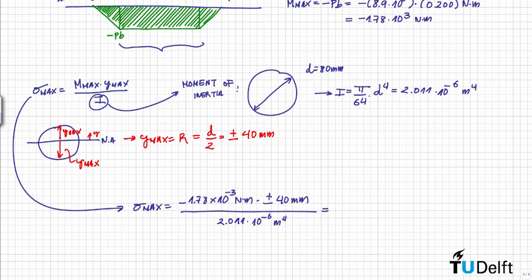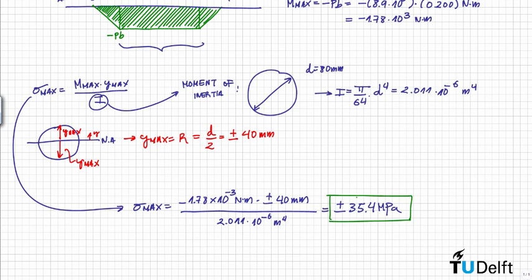The maximum bending stress equals plus or minus 35.4 MPa. Therefore, the maximum bending stress is 35.4 MPa in tension and 35.4 MPa in compression.